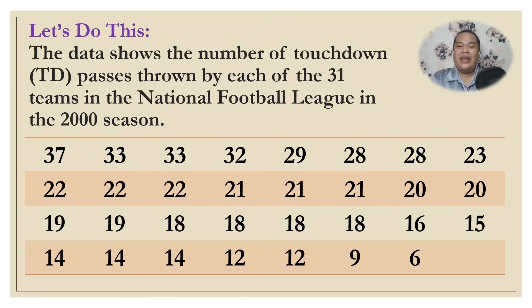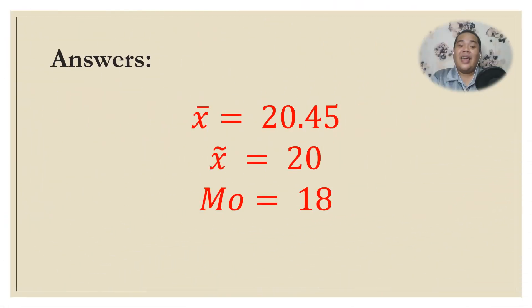It's now time for you to try a wider data set. The data shows the number of touchdown passes thrown by each of the 31 teams in the National Football League in the 2000 season. Find the mean, the median, and the mode. You may pause the video to answer. The answers are: mean = 20.45, median = 20, and mode = 18.